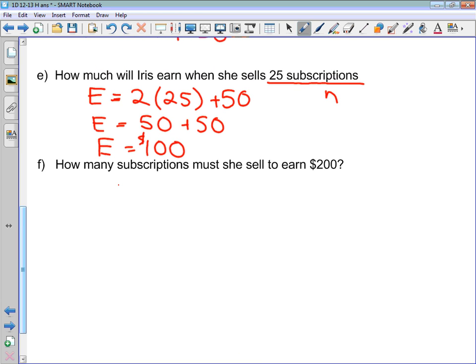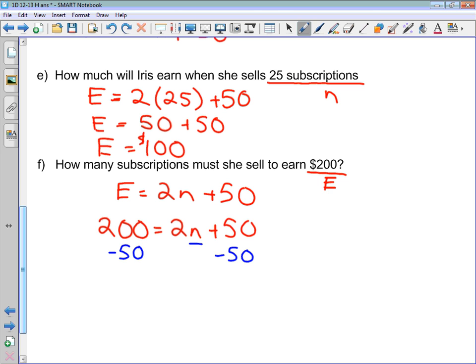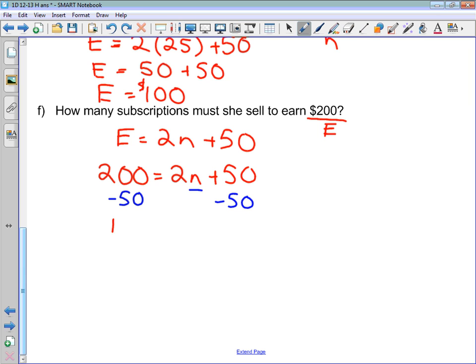How many subscriptions must she sell to earn $200? Again, we can use our equation, E equals 2N plus 50. The number that they're giving us here is $200. Is this a value for E or a value for N? Well, $200 represents our earnings, so they're giving us a value for E. So let's sub E into our equation here. And let's solve for N. Solving equations, this is back unit 5, 6. We want to subtract 50 from both sides, and we see plus 50, so we do the opposite, we subtract 50. So we're going to have 150 equals 2N. And then to solve for N, we see 2 times N on the right-hand side, so we're going to divide by 2. And we end up with 75 equals N. So how many subscriptions must she sell? She has to sell 75 subscriptions to earn $200.